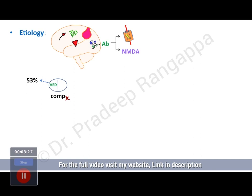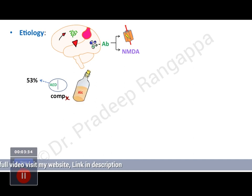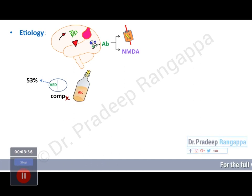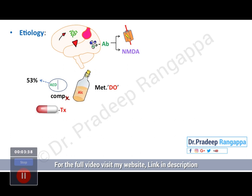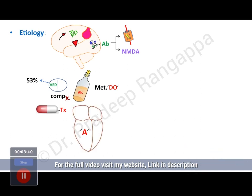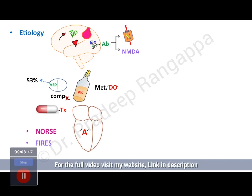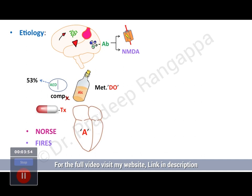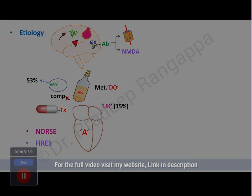Non-compliance with anti-epileptic drugs accounts for 53 percent of status epilepticus causes. Other causes include alcohol or alcohol withdrawal, metabolic disorders, drug toxicity, and cardiac arrest or arrhythmias. There are also new entities: NORSE (New Onset Refractory Status Epilepticus) and FIRES (Febrile Infection-Related Epilepsy Syndrome), which have emerged recently as commoner causes of status epilepticus.